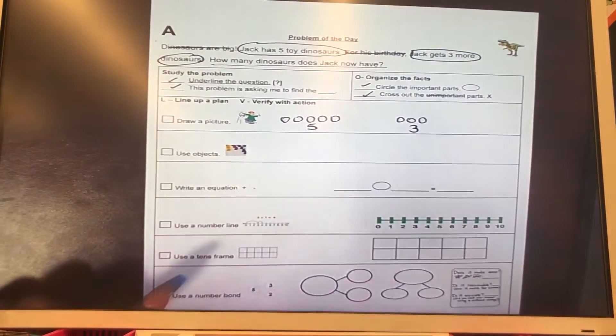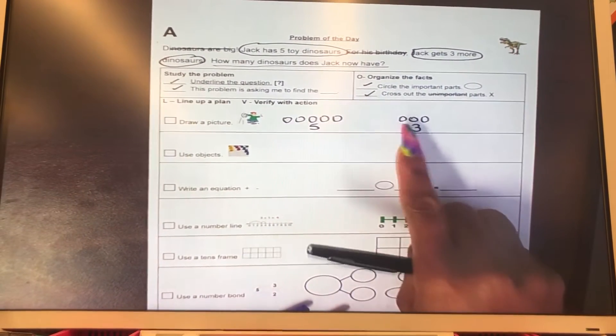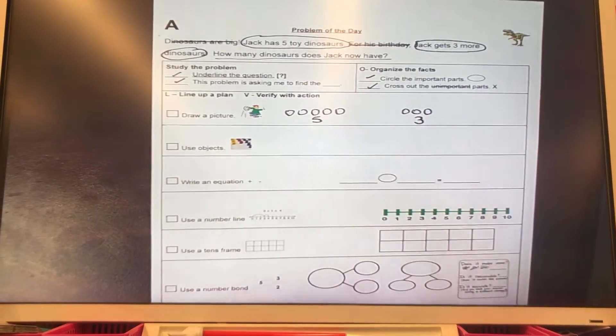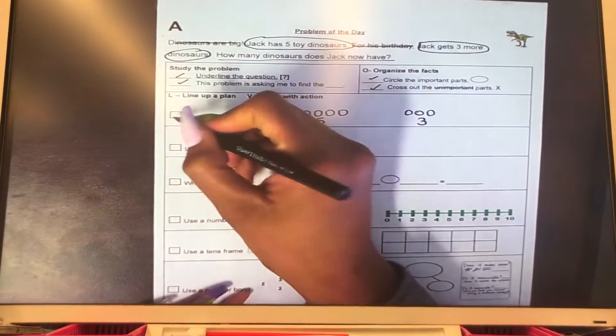Put them together. Let's use our count on strategy. So let's count on. Five, six, seven, eight. Great. Now let's put a check, you drew a picture.